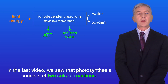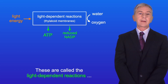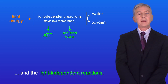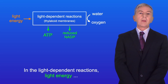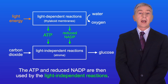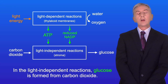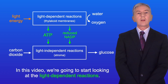In the last video we saw that photosynthesis consists of two sets of reactions. These are called the light dependent reactions and the light independent reactions. In the light dependent reactions light energy is used to produce the compounds ATP and reduced NADP. The ATP and reduced NADP are then used by the light independent reactions, and in the light independent reactions glucose is formed from carbon dioxide.